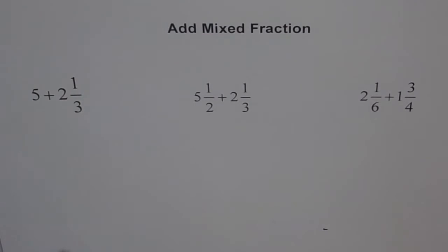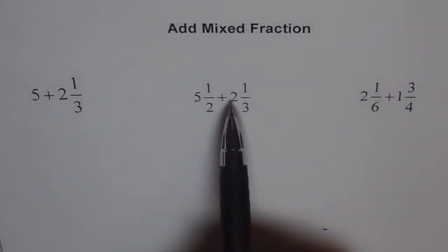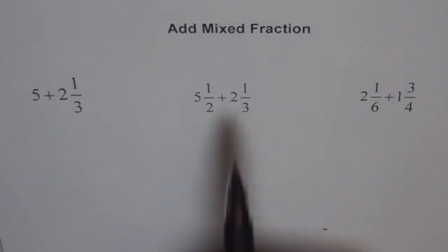what should you do? Well, there are two ways to do it. One, in mixed fractions, you can add the whole numbers and then you can add the fractions. That way you can get your answer. That's one way.